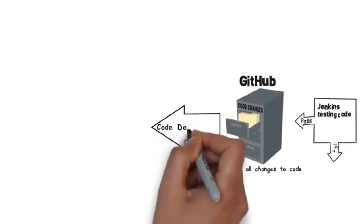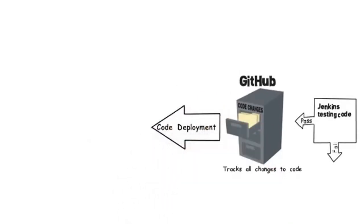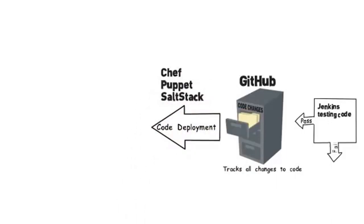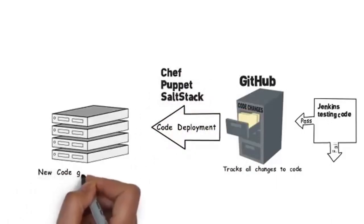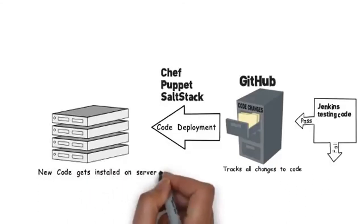They will need tools for configuration management such as Chef, Puppet, and SaltStack. These tools will allow them to deploy applications in an automated fashion, maybe across hundreds or thousands of servers in different locations.